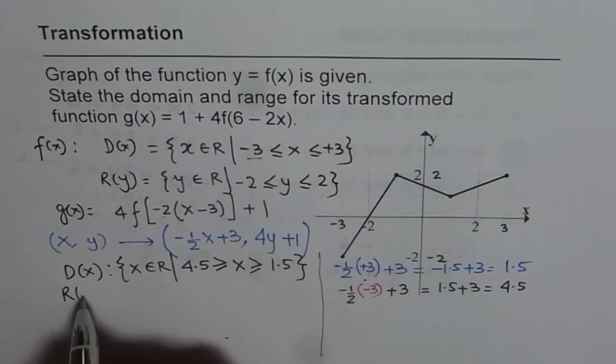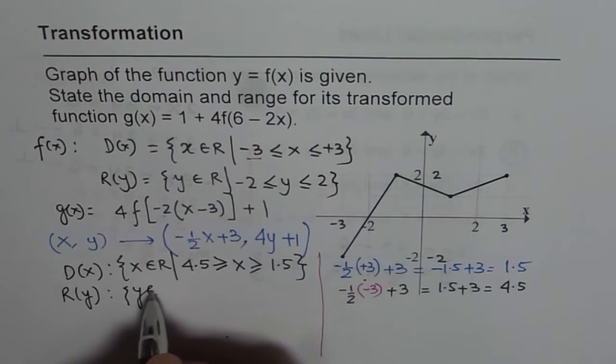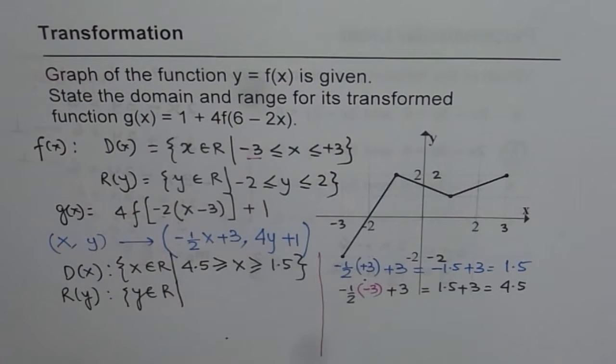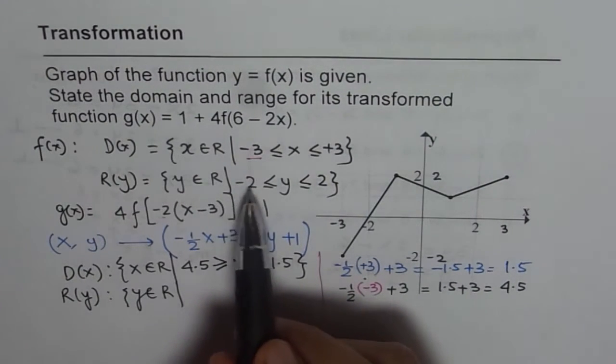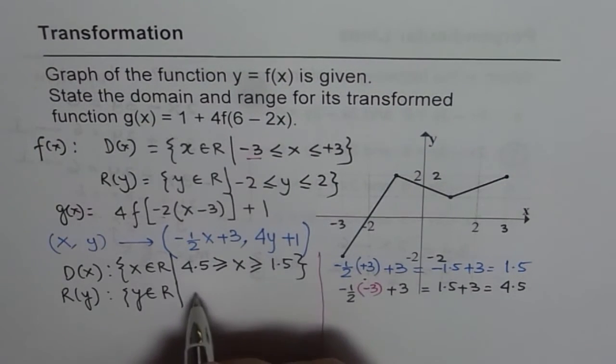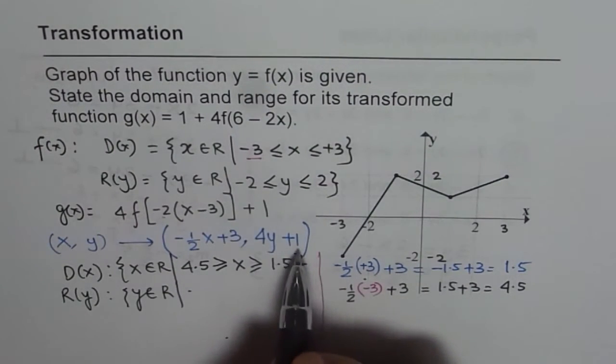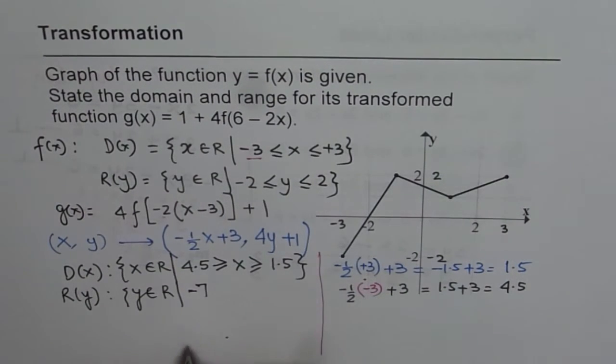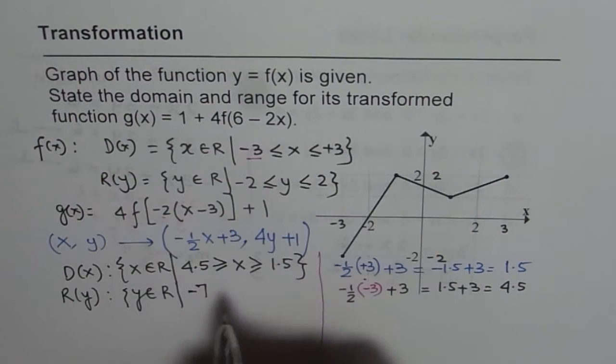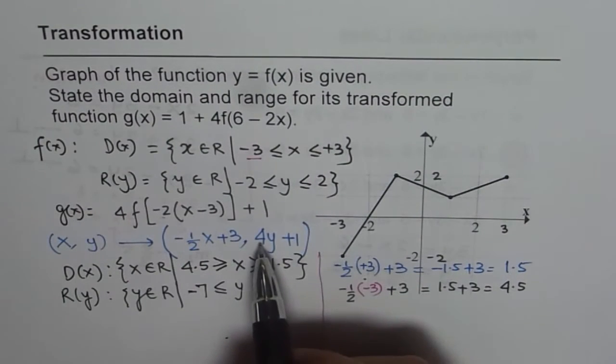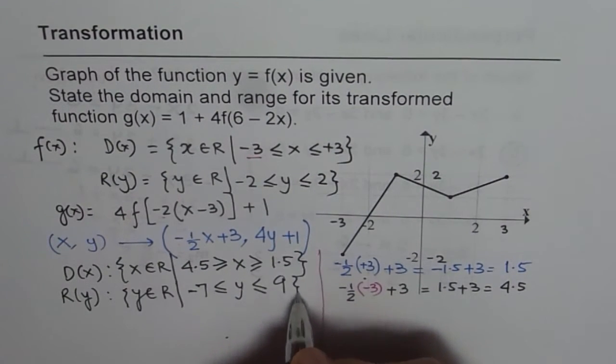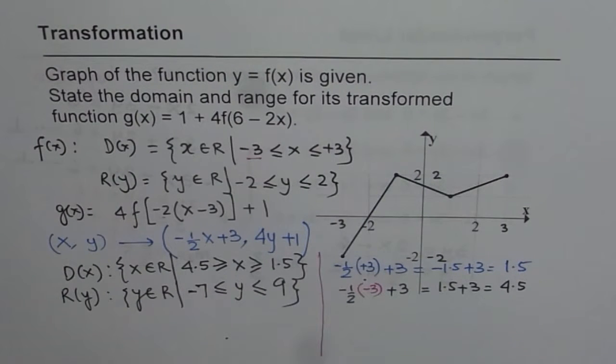Now I hope you can pause the video and find the range on your own. Method is exactly same. This time, what we are going to do for range is we are going to multiply the values by 4 and then add 1. So that is simple. 4 times minus 2 is minus 8 plus 1 is minus 7, so it is minus 7. But we are multiplying by a positive number, so the inequality remains as it was. Next number is 2. 2 times 4 is 8, 8 plus 1 is 9. And so we get our transformed range, and that is from minus 7 to 9.